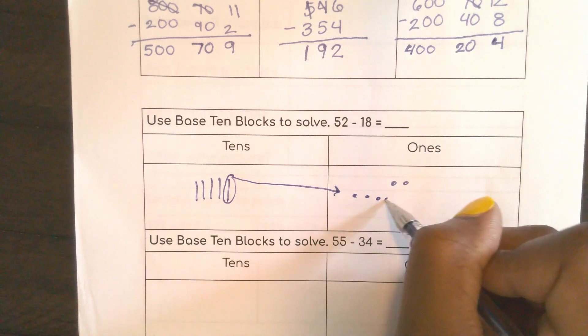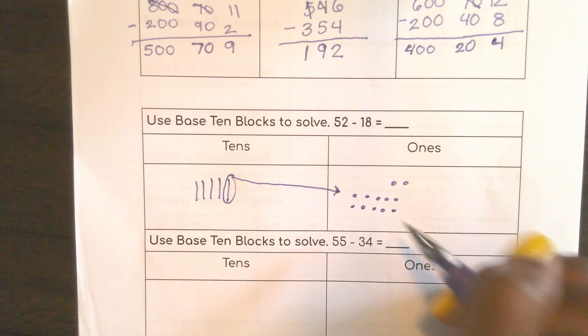10, 1, 2, 3, 4, 5, 6, 7, 8, 9, 10. I need 10 over here. So all together I would have 12.